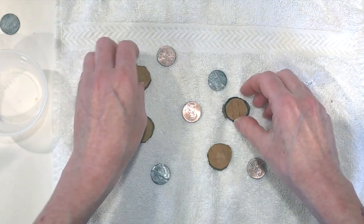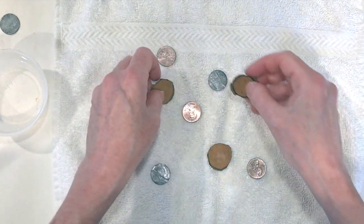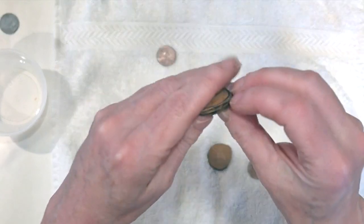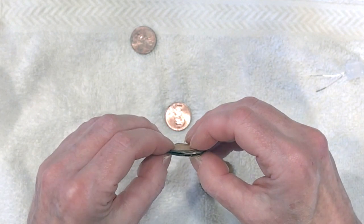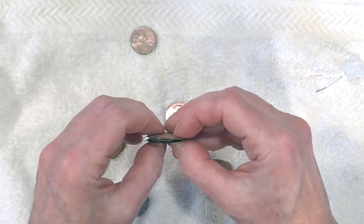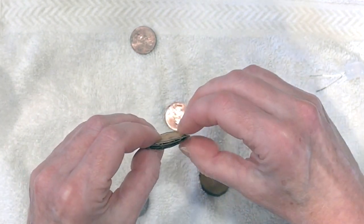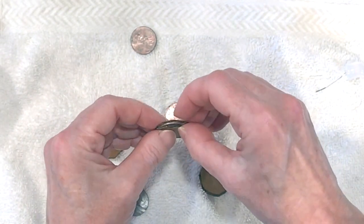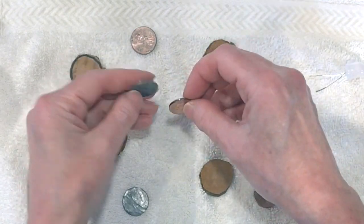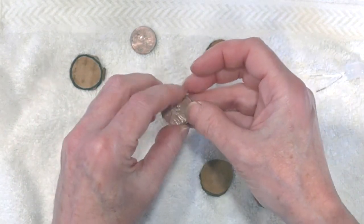Another thing is to make sure that your cardboard pieces aren't touching each other around the pennies. Electricity is lazy and it will always take the shortest route it can. So if it can go straight through from one cardboard to the next without dealing with the penny, that's what it will do. And same for making sure that none of your pennies are touching each other.